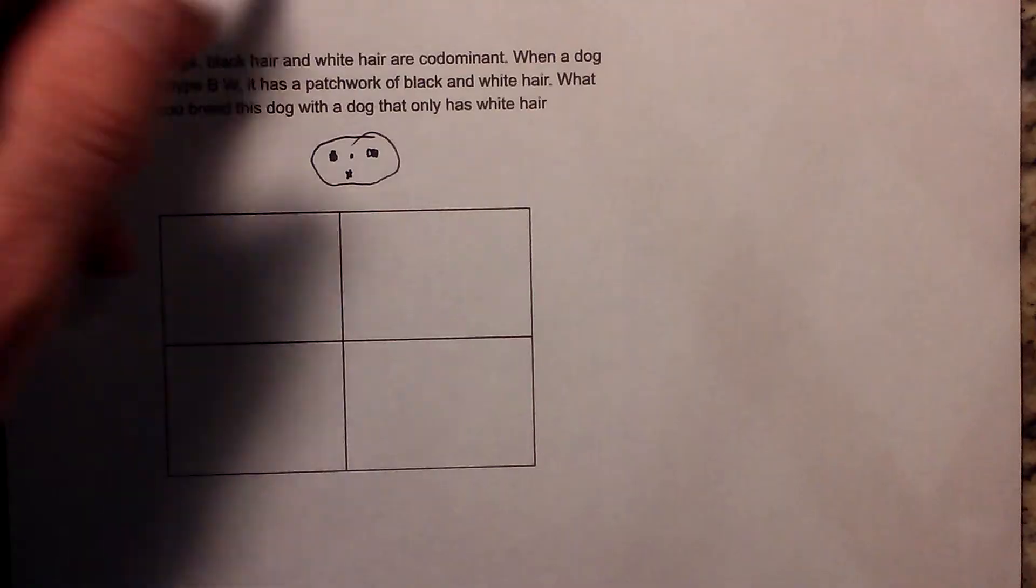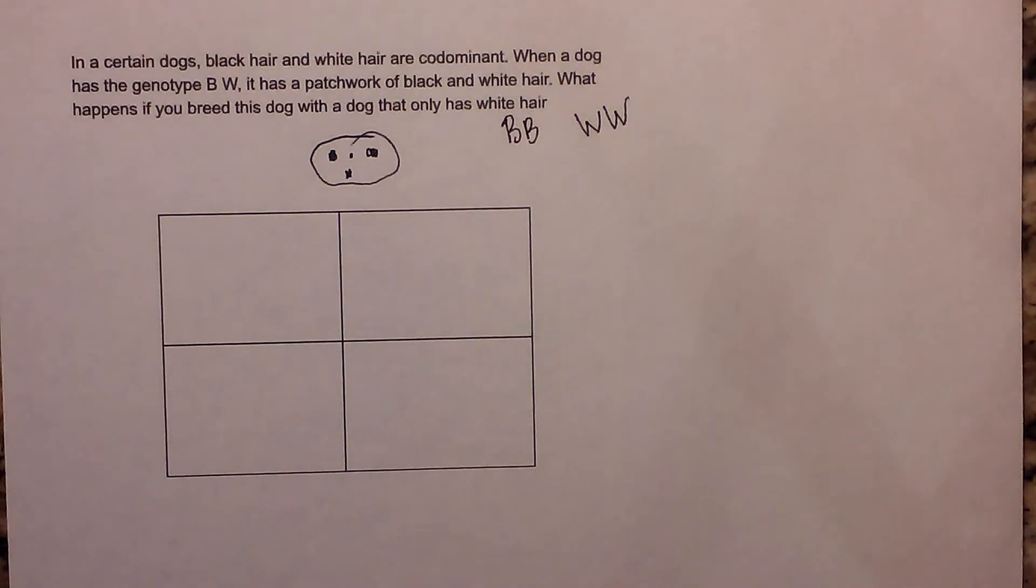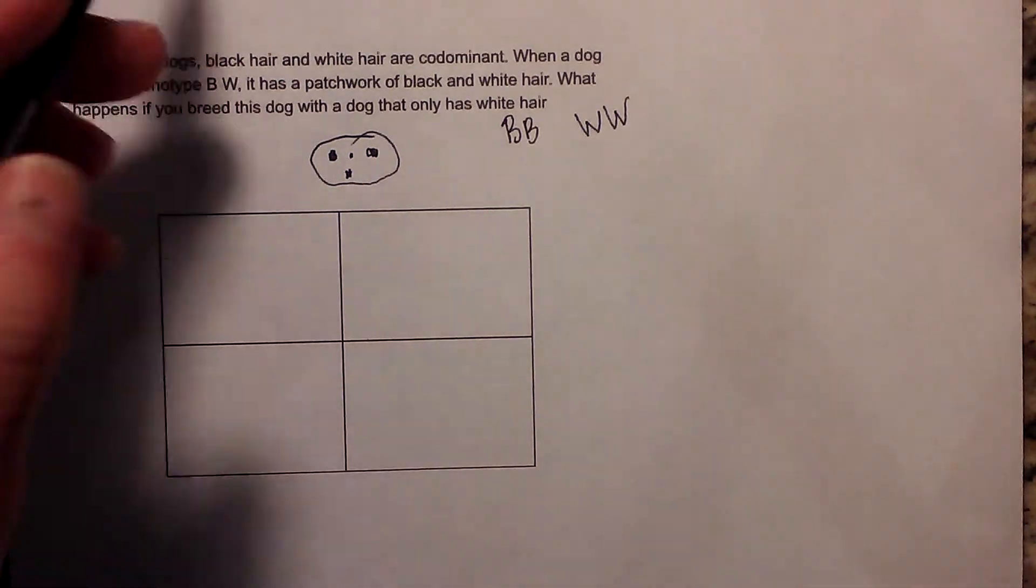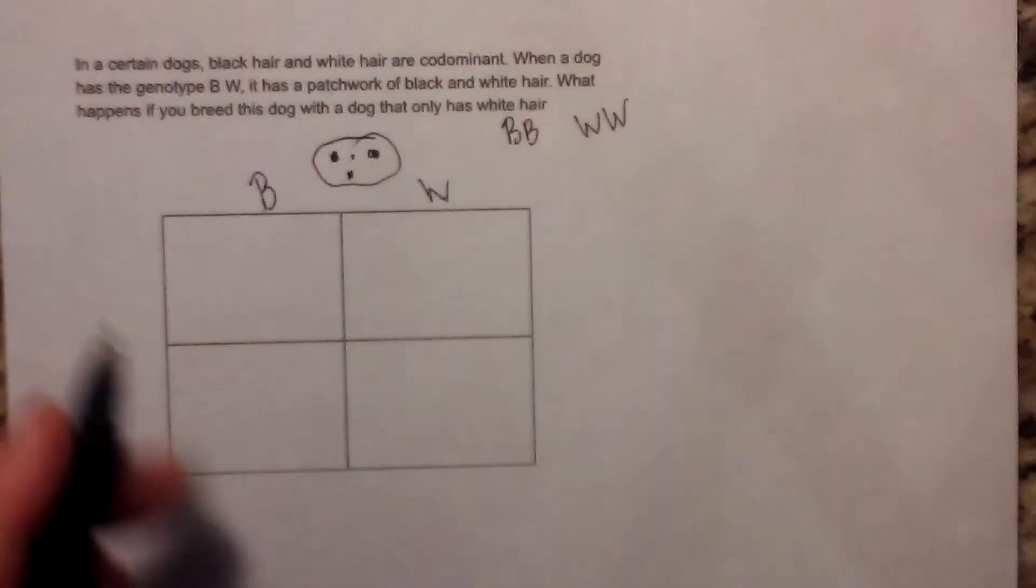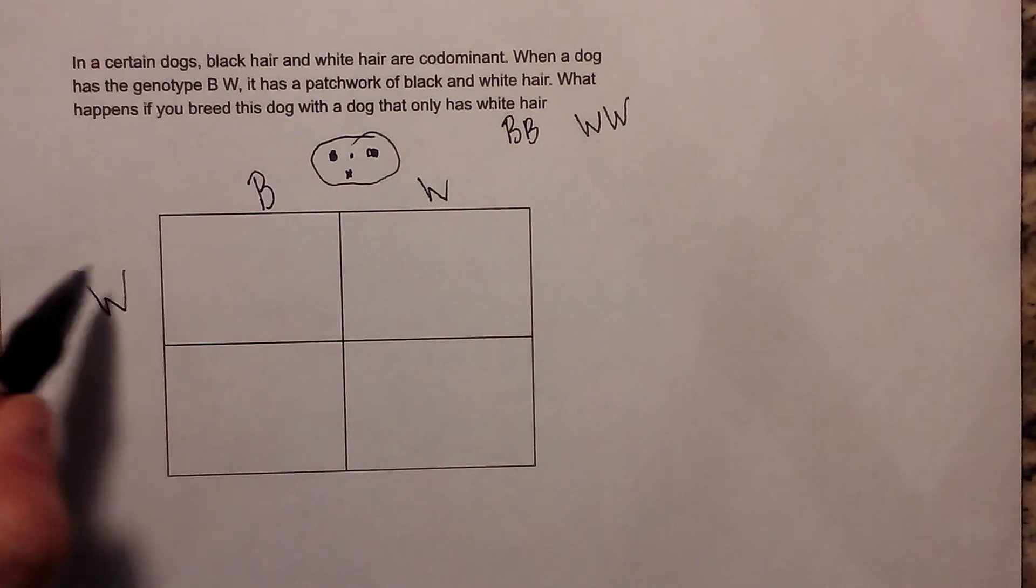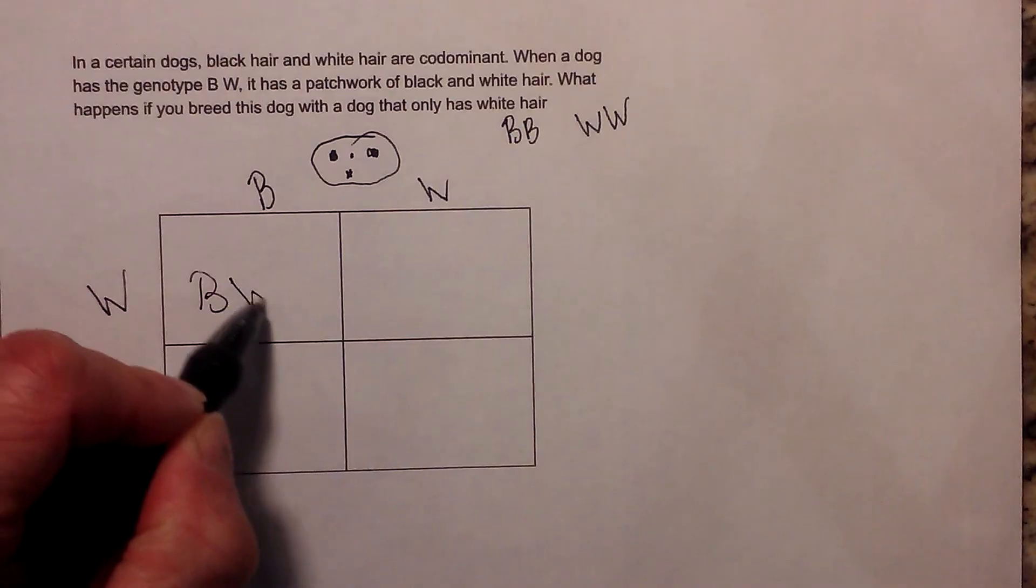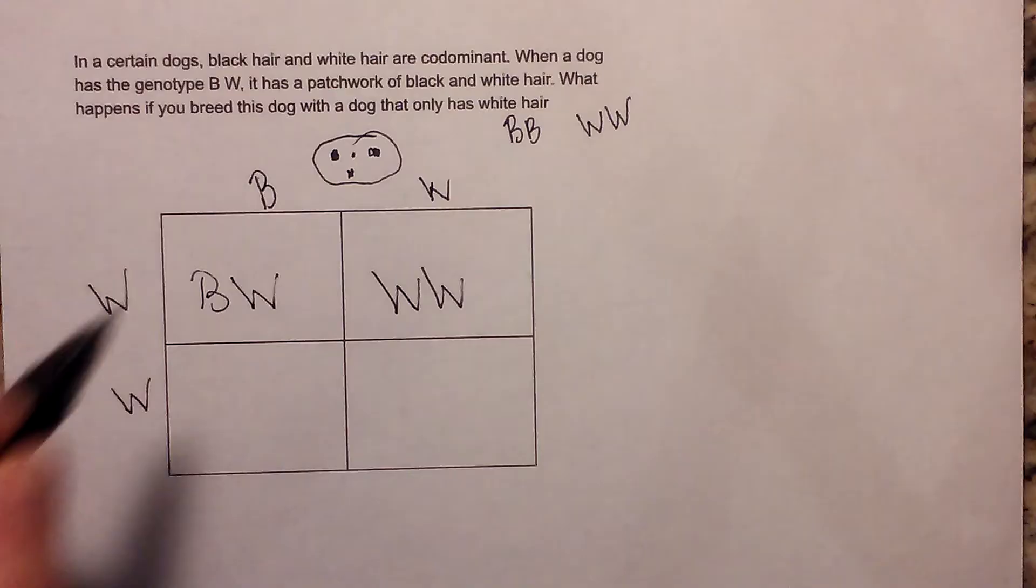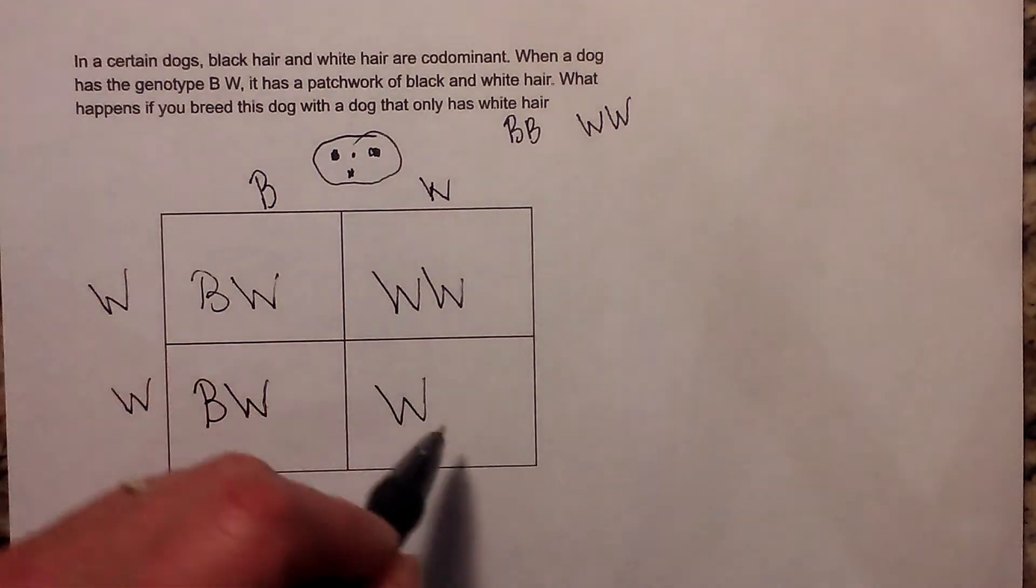Black hair is going to be written BB, white hair will be written WW, because remember they both are dominant. So we have a black and white dog and then we have a white dog. Now I just fill in the boxes: BW, WW, BW, and WW.